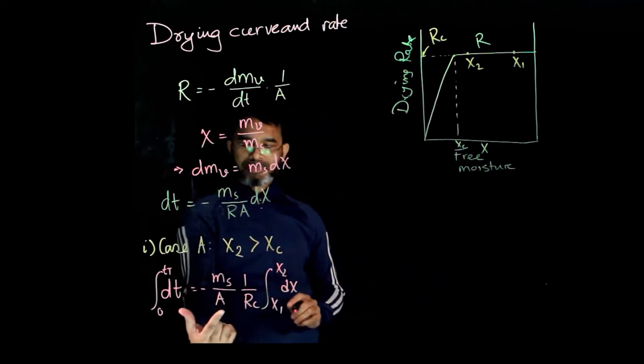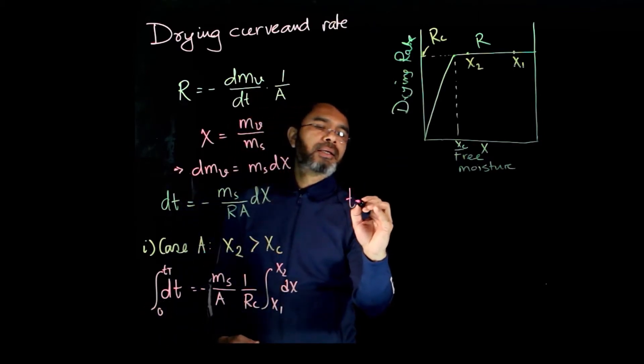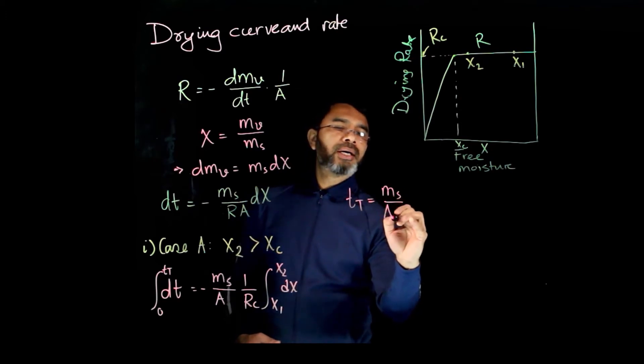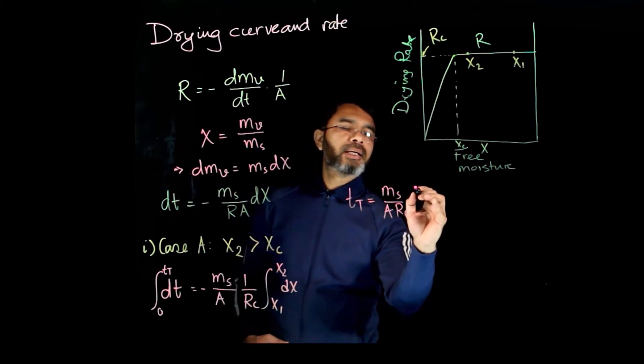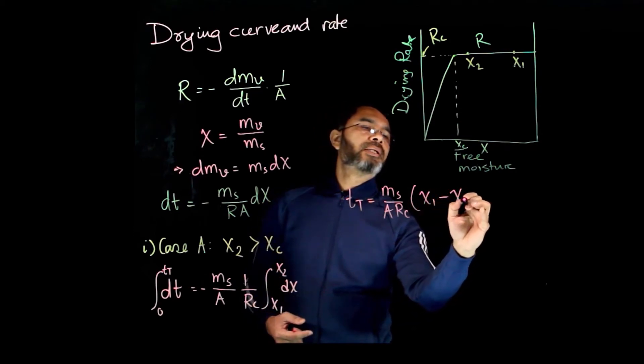So for this case, simply get the expression. If we do the integration, dt will be ms over a rc times x1 minus x2.